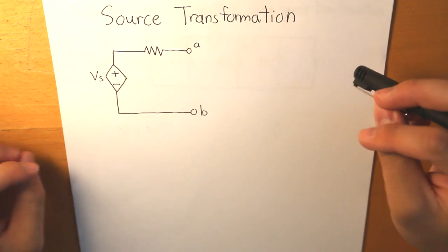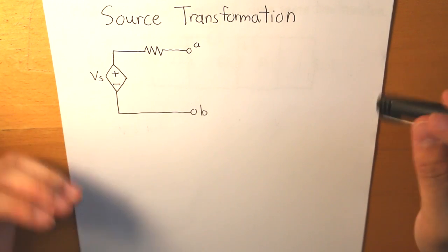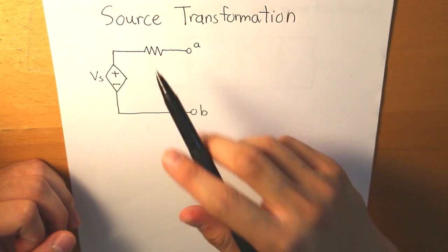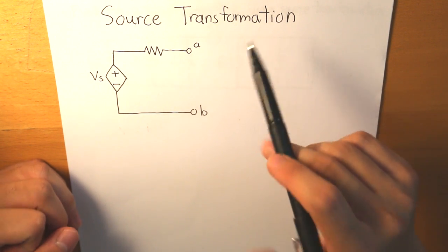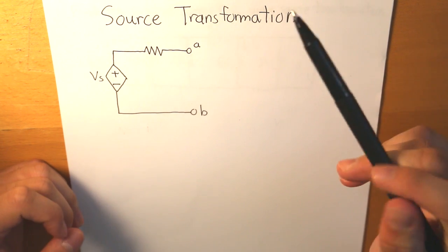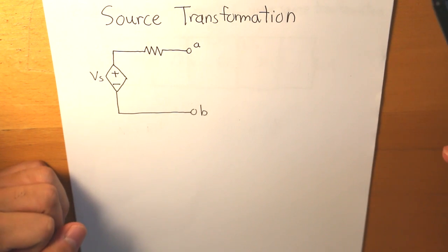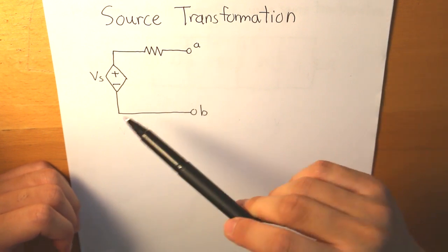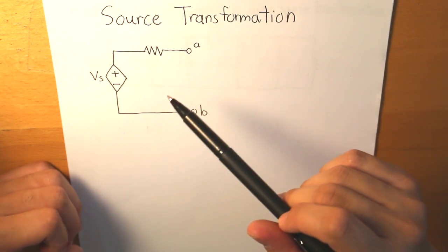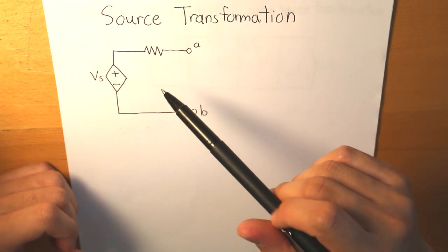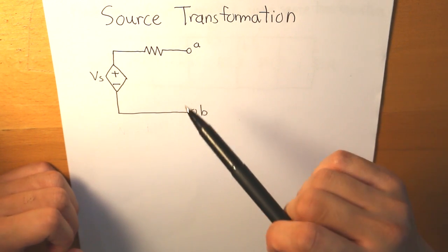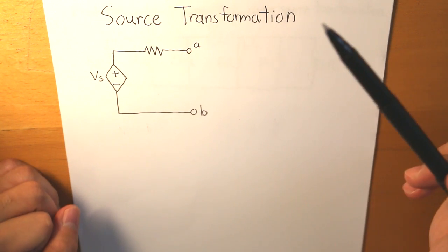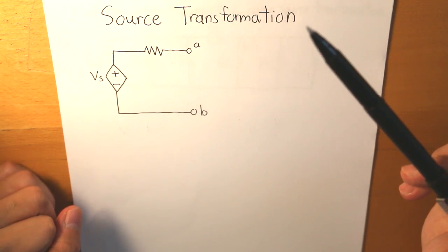Hello everybody. In today's video we will be talking about source transformation. Source transformation is the process of replacing a voltage source in series with a resistor by a current source in parallel with a resistor.